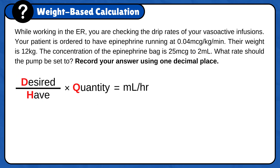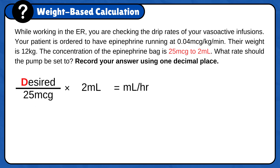Now that the formula is ready, we need to plug in the numbers. Start with half and quantity — for this problem it is 25 micrograms to 2 milliliters. For desired, plug in the doctor's order: 0.04 micrograms per kilogram per minute. Since the medication prescribed is in micrograms, like the unit on the bottle, and the patient's weight was given in kilograms, the only conversion needed is minutes to hours.